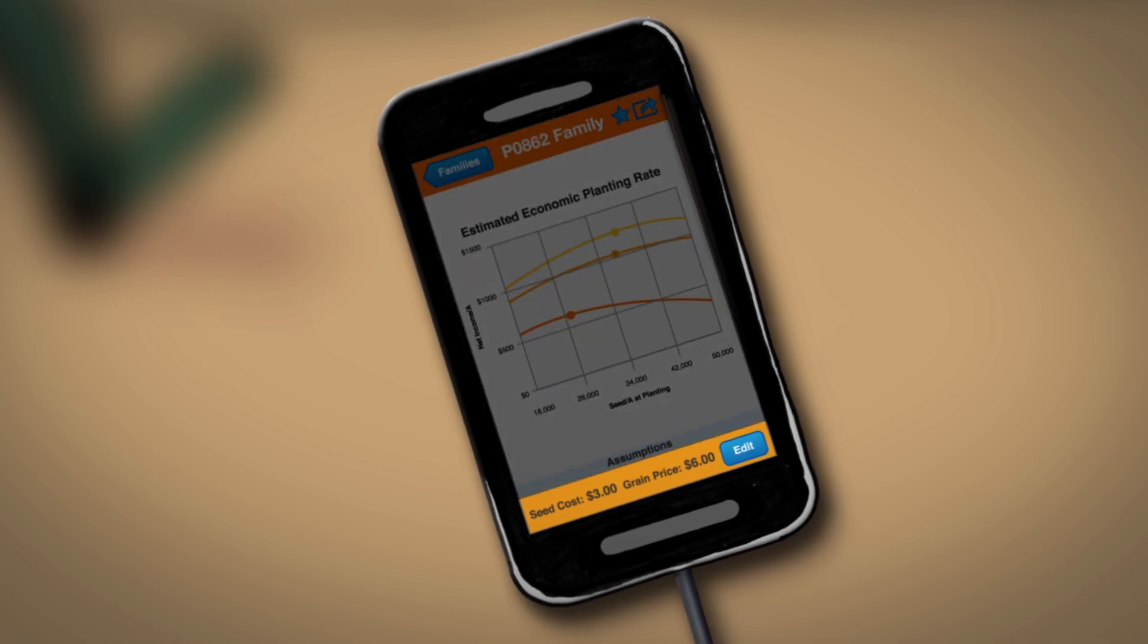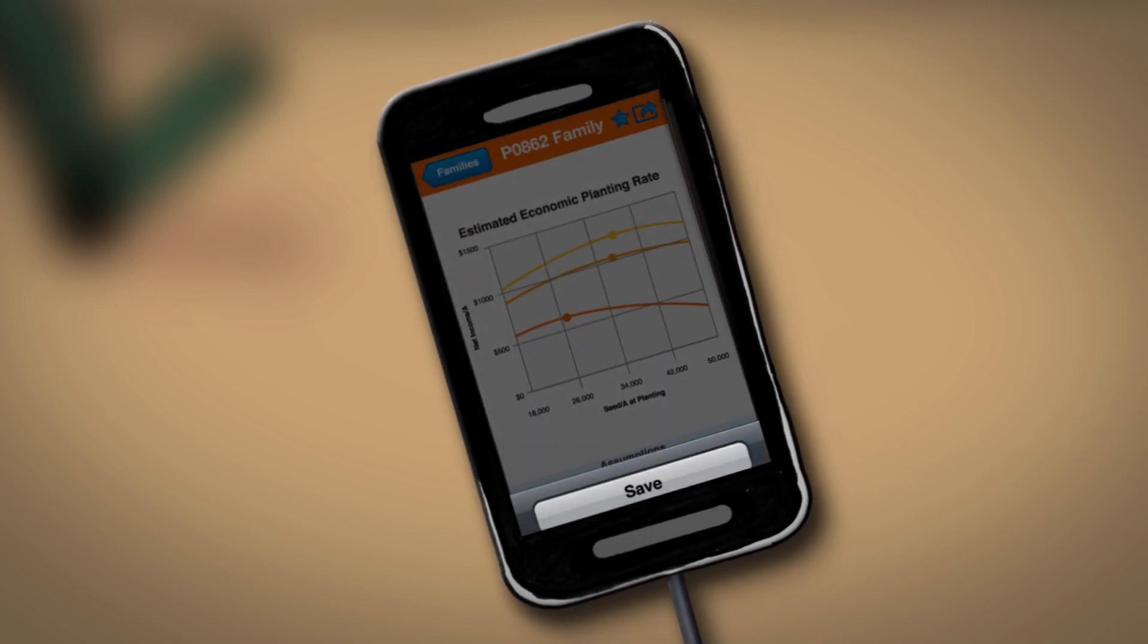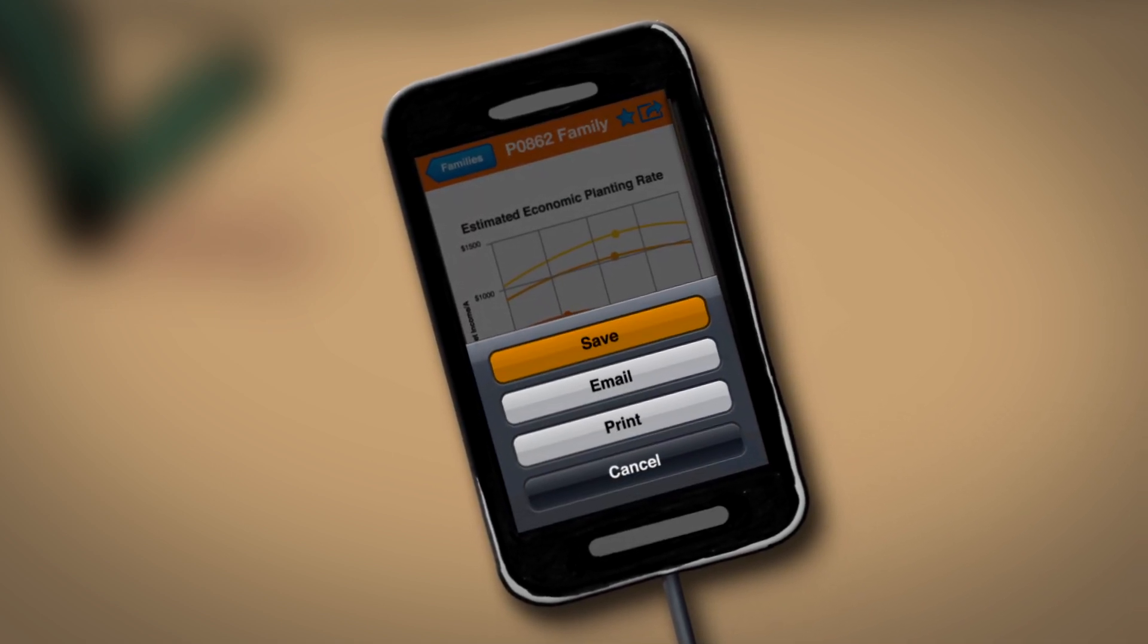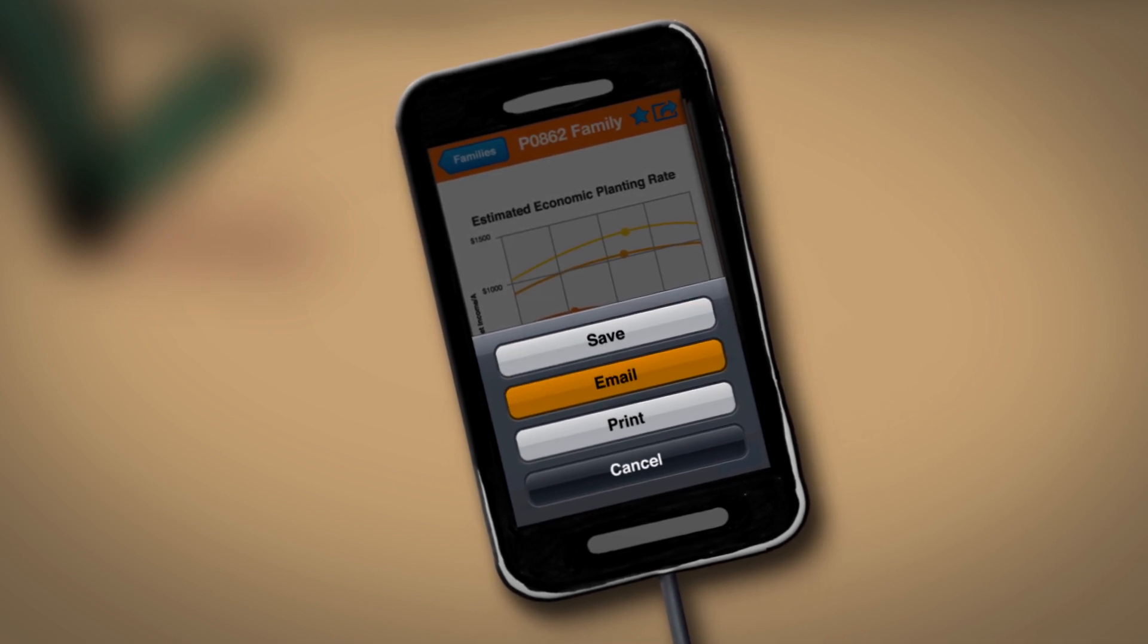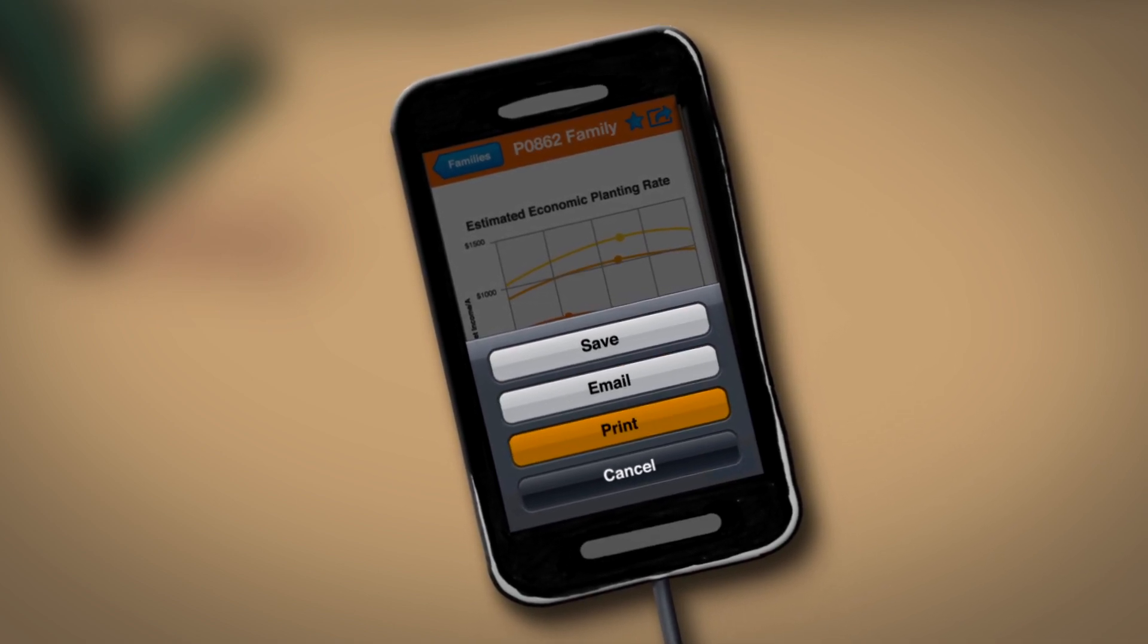Growers can also edit the seed cost and grain prices they wish, save information on their favorite hybrids, email planting rates to others, and print the data for later analysis.